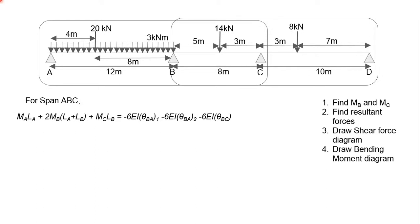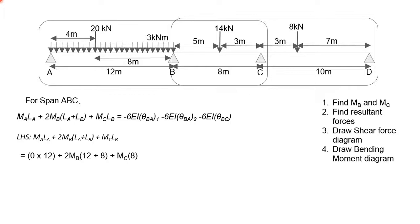So for span ABC, this is the formula. We have to take the left hand side first. The LHS is: MA·LA + 2MB(LA + LB) + MC·LB. We sub in the values. There's a 0 here because we are taking the moment at A, so it's 0. For LA and LB it's 12 and 8, because LA is the length from A to B and LB is the length from B to C. So you get the answer: 72MB + 8MC.